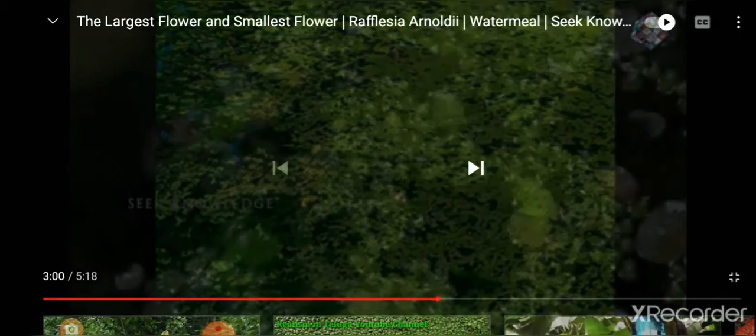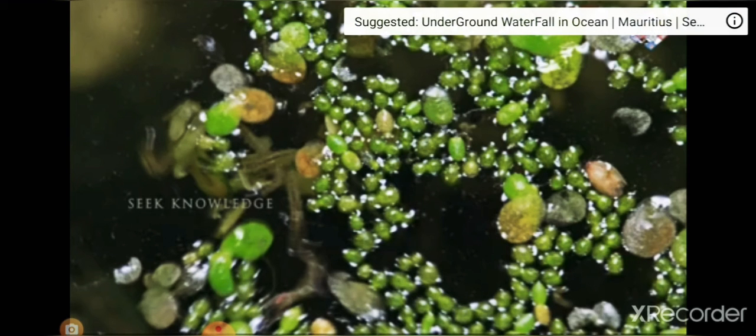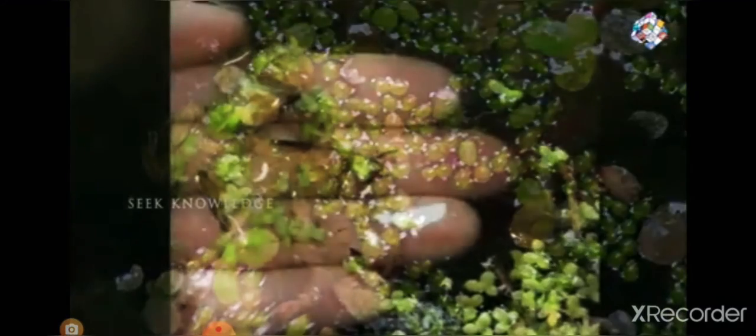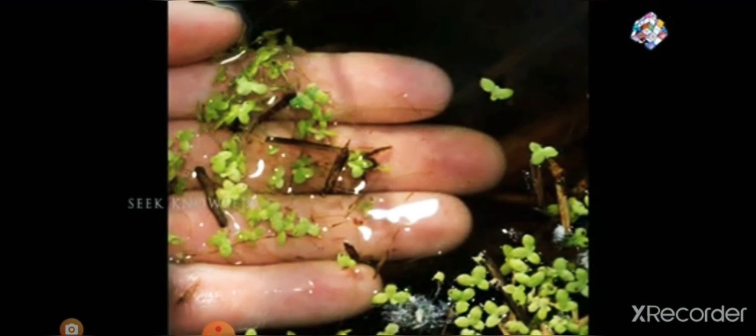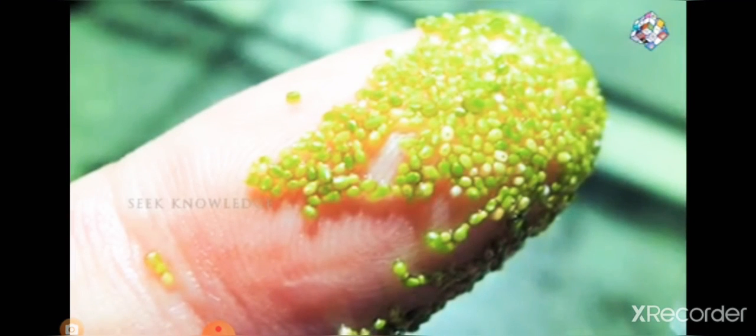Roughly the smallest flowers that we know about today. The plant is generally 1/42 inches long and 1/85 inches wide - about the size of a poppy seed. Wolfia is a genus of 9 to 11 species which include the smallest flowering plants on earth, commonly called watermeal or duckweed. These aquatic plants resemble specks of cornmeal floating on the water.